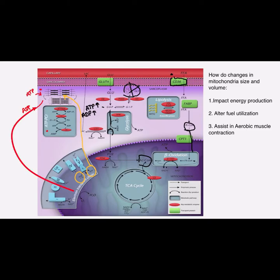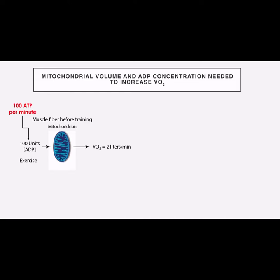If we talk about the impact on energy production, we're talking about how the mitochondria aids in ATP. Let's back up and look at the physiology of mitochondria and how it interacts with ATP and ADP. We can see that we have an untrained mitochondria — it's small. Using an arbitrary unit, let's say that when we exercise an untrained individual at a steady slow pace, we use about 100 units of ATP per minute. When muscle is contracting and ATP is binding to the myosin head and getting kicked off as ADP, we have 100 units per minute of ADP sitting in the cytosol.